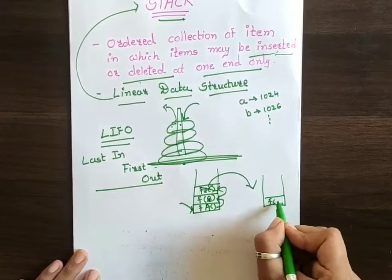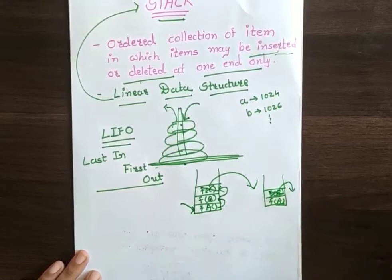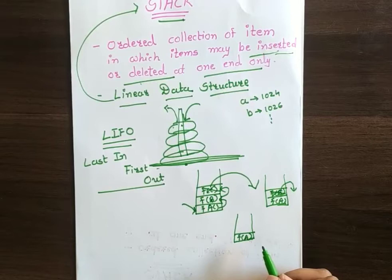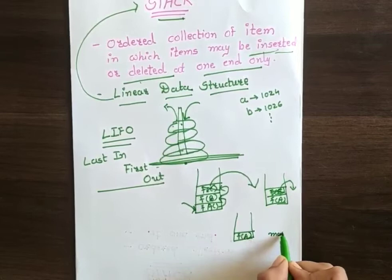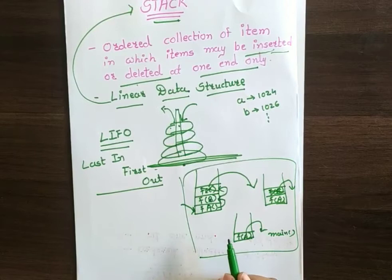So now I am having only function A and function B on the stack. And as soon as function B completes its task and returns its value to the main function, I have to pop this out also. So this is how we use stack in function calls.